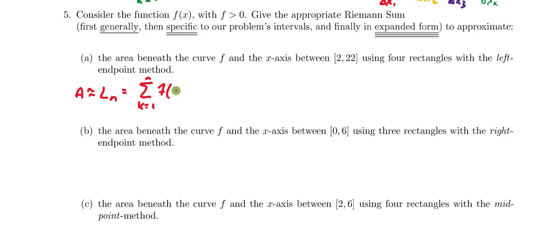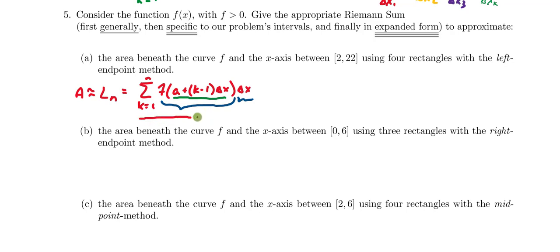This is going to be f of a plus (k minus 1) times delta x — all inside the function — then times delta x on the end. This expression is the height of the rectangle and that is the width. This piece is a systematic way of ensuring that I'm always selecting the left endpoints of my sub-intervals, forcing me to compute the left endpoint method. This is what I mean when I say to write it out generally.